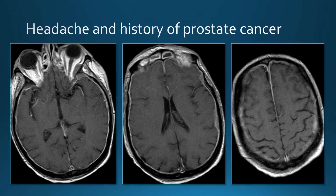Some other patients with pachymeningeal enhancement: this patient has a history of prostate cancer, and we again see diffuse pachymeningeal enhancement, but in this case there are some areas where it's more focal and thicker. If you see pachymeningeal enhancement that is somewhat non-uniform with thicker areas, we're more often dealing with neoplastic pachymeningeal involvement — this is a patient with metastatic prostate cancer.